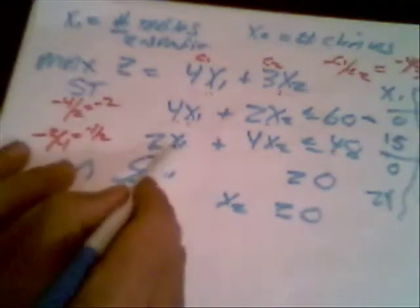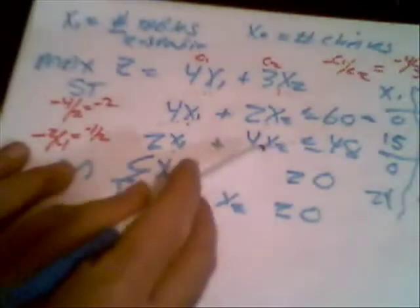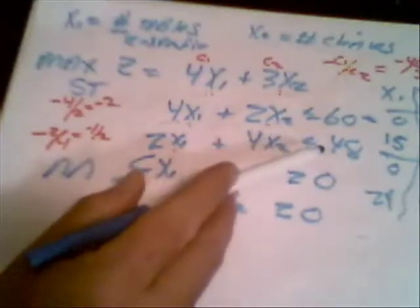Likewise, if we stick 12 for x1 and 6 for x2 in the second constraint, you'll see that that will sum to 48. So 48 on the left-hand side, 48 on the right-hand side gives us a binding constraint.